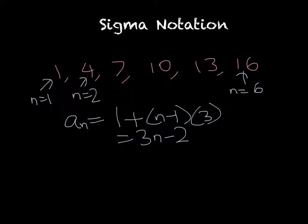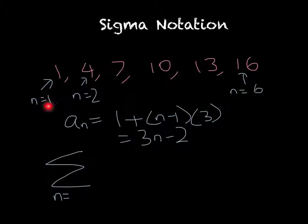So this series in sigma notation, we would have a sigma sign, n equals, we're going from 1 to 6, so we would write 1 and a 6 up above the sigma sign, and then you would write the formula for a of n.